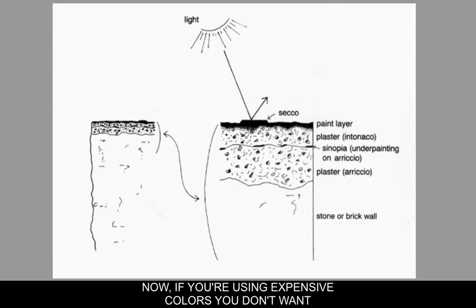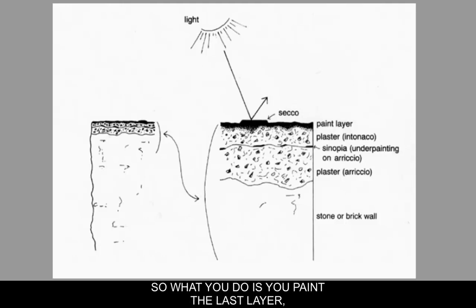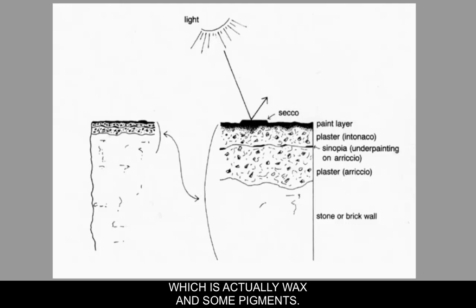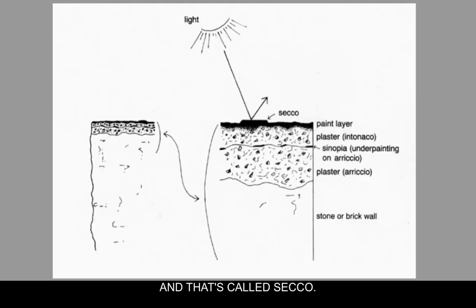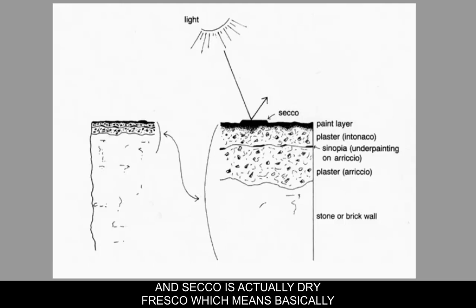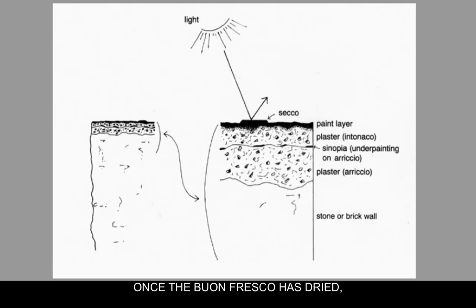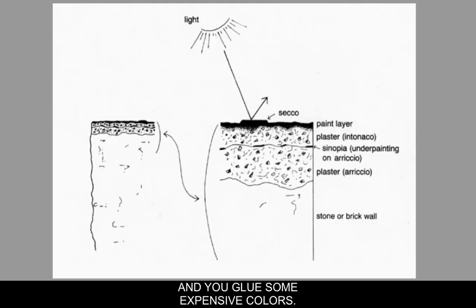If you're using expensive colors, you don't want them soaking into the wall. So the last layer is sometimes applied with encaustic — wax and pigments — or tempera paint, which is egg yolk or egg whites mixed with pigments that glue the particles to the wall. This is called secco, meaning dry fresco: once the buon fresco has dried, you go back in with a dry layer and apply the expensive colors.